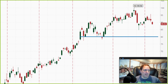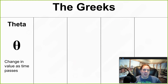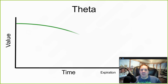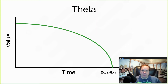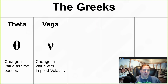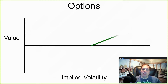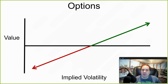Before we can calculate probability of profit, you really have to understand the Greeks. The first one is theta, which is the change in value as time passes. We know that the extrinsic value of an option approaches zero as we approach expiration. The next one is vega — the change in value with implied volatility. As implied volatility goes up, the value of an option goes up, and as implied volatility goes down, the value of the option goes down.